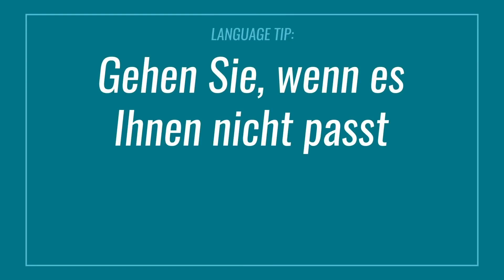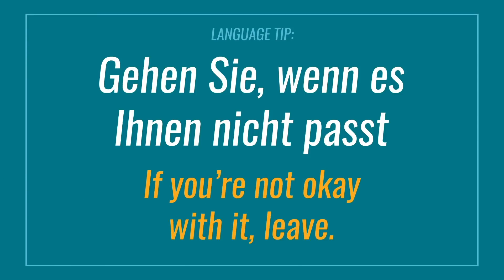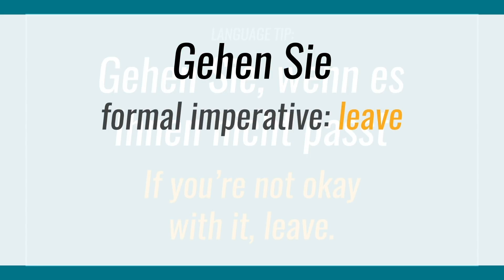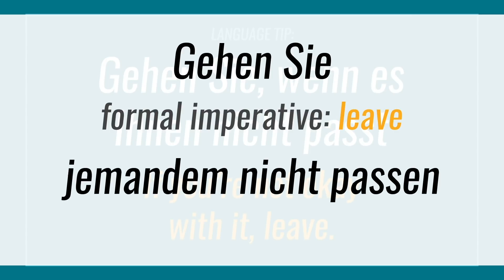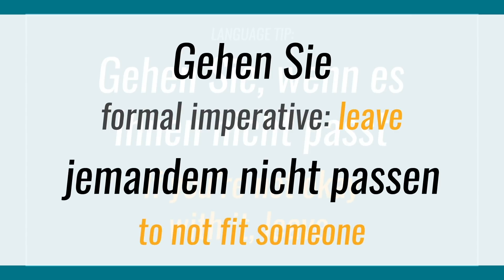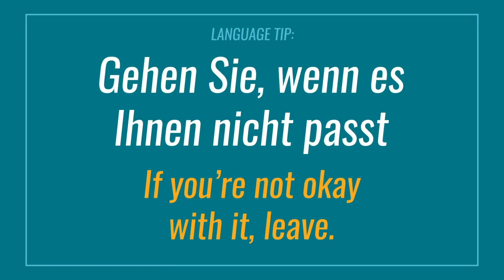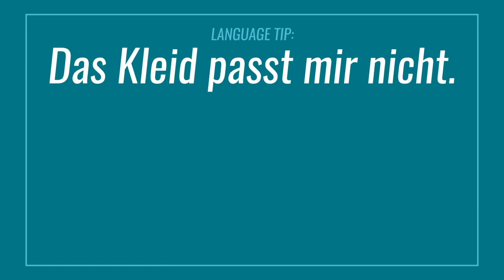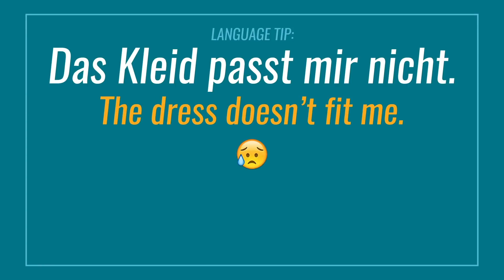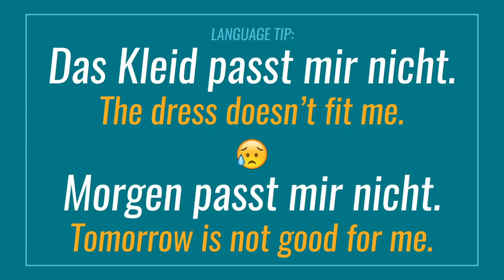A final example is Gehen sie, wenn es ihnen nicht passt, which literally means 'if you're not okay with it, leave.' This sentence uses both sie and ihnen. Gehen sie is the formal imperative 'leave,' and jemanden nicht passen, meaning 'not to fit someone,' is a common expression used to describe a piece of clothing that doesn't work on someone — for example, das Kleid passt mir nicht, meaning 'the dress doesn't fit me.' It's also used in non-ideal situations such as Morgen passt mir nicht, meaning 'tomorrow is not good for me.'